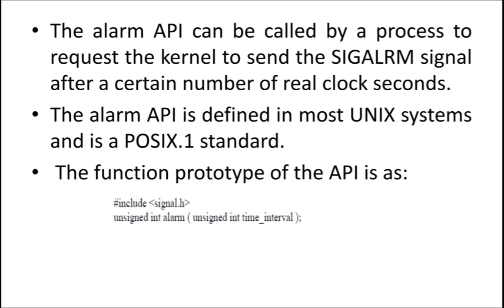Any process can call alarm API — any process can request the kernel to call the alarm API. The alarm API is called when a certain number of seconds has elapsed. For example, you need to set the alarm for five minutes. After the five minutes, you have to send the signal alarm signal to the process. Whatever the time you have set, once that is elapsed, you have to tell the process to wake up. You can request the kernel to send the signal alarm signal to the process, and the kernel will send it when that particular amount of time is elapsed.